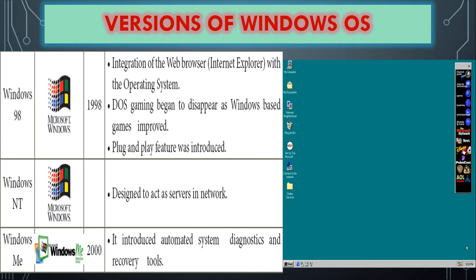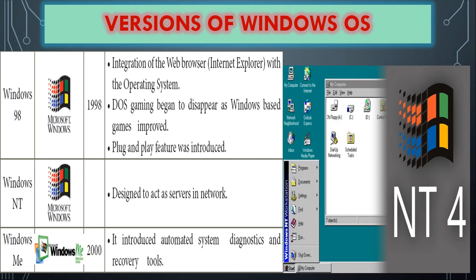Windows NT was designed to act as a server in a network. It is used for server-based computers, which store large amounts of data and files. It was a popular operating system version for business use. Windows Me — Windows Millennium Edition — introduced automated system diagnostics and recovery tools, providing backup and recovery functionality.